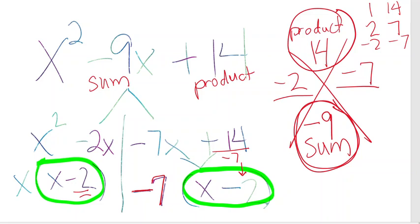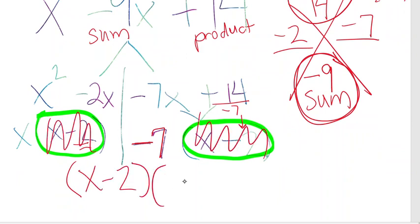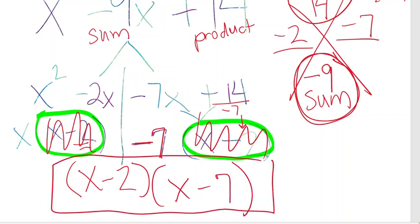So now that I have that, the same binomial here, I know that that's one of my answers, x minus 2. And when I remove that, I'm left with my other answer, x minus 7. So that represents the factored form.